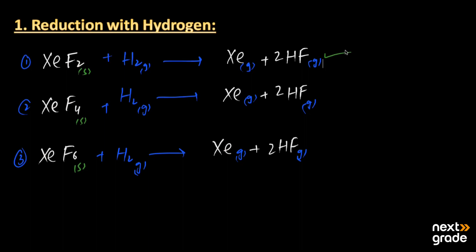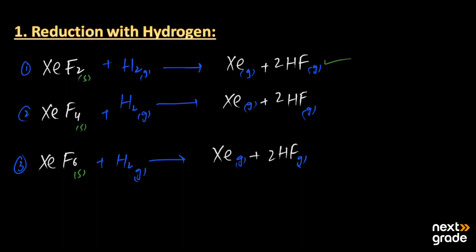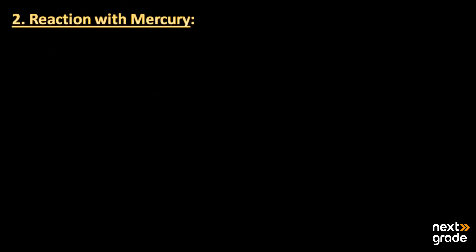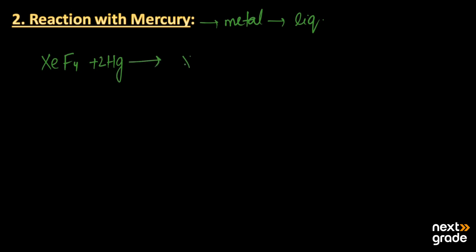The next reaction is with mercury. Mercury is a metal and is the only metal present in the liquid state. Xenon tetrafluoride (XeF4) reacts with mercury and produces xenon gas and mercuric fluoride (HgF2), which is present in the solid state. Xenon is released as a gas since it is a noble gas, and mercury used is in the liquid state.